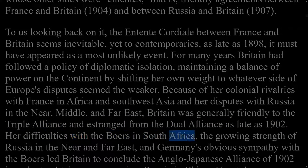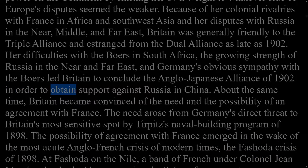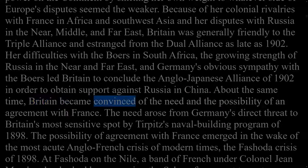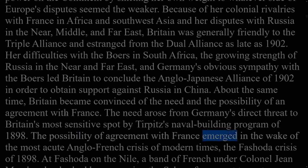Her difficulties with the Boers in South Africa, the growing strength of Russia in the near and far east, and Germany's obvious sympathy with the Boers led Britain to conclude the Anglo-Japanese alliance of 1902 to obtain support against Russia in China. About the same time, Britain became convinced of the need and possibility of an agreement with France. The need arose from Germany's direct threat to Britain's most sensitive spot by Tirpitz's naval building program of 1898.